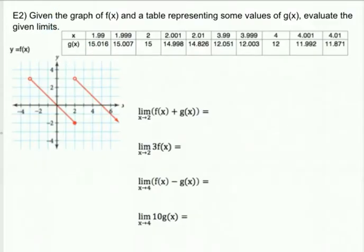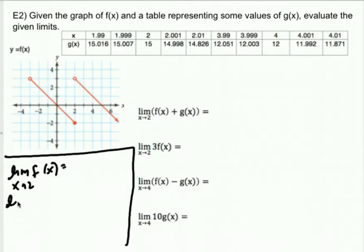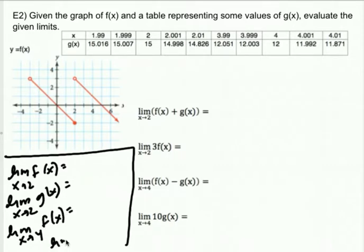Now let's combine some skills. Given the graph of F of X and a table with some values for G, we're going to evaluate some limits. I'd suggest noticing that all of these are about X approaching four and X approaching two. Go ahead and find the four basic limits you'll need: the limit as X approaches two of F of X from the graph, the limit as X approaches two of G of X from the table, the limit as X approaches four from the graph, and the limit as X approaches four from the table.